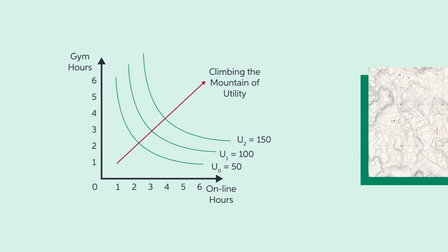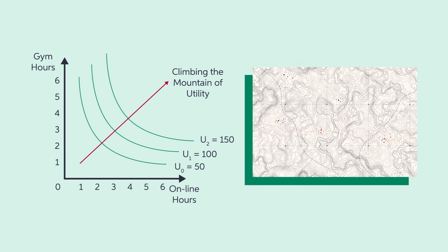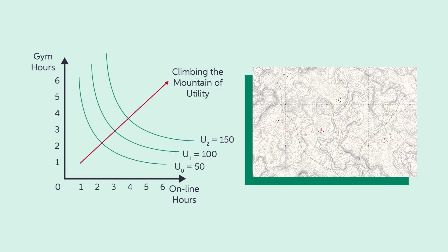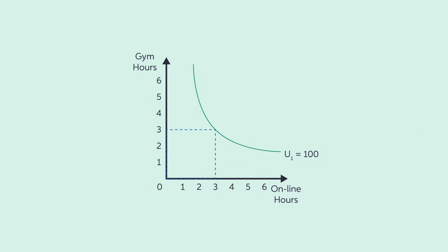This is much like the contour line of a topographical map that describes the different combinations of latitude and longitude that remain on the same elevation of a mountain. If Garrett currently enjoys 3 hours of gym time and 3 hours of online time each week, this combination produces a utility level of 100 units.